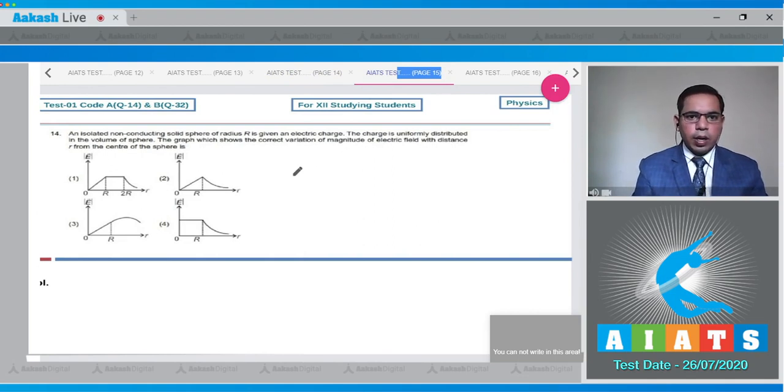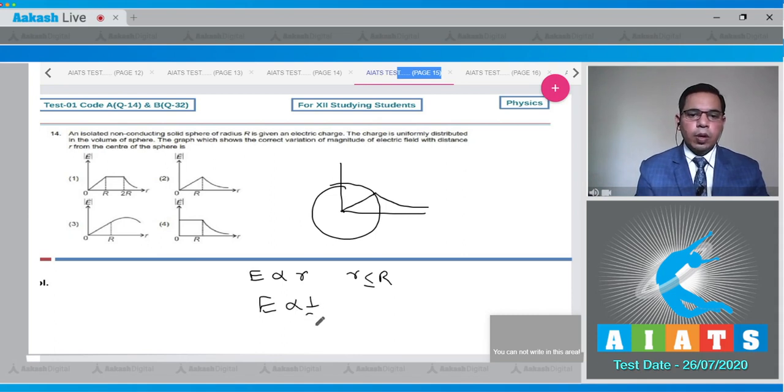Now move to question number 14, which states that an isolated non-conducting solid sphere of radius r is given an electric charge. The charge is uniformly distributed in the volume of the sphere. The graph which shows the correct variation of the magnitude of electric field with distance r from the center of the sphere? We know that for a uniformly charged solid sphere, inside the sphere electric field varies linearly and becomes maximum, and after that it decreases as an inverse square law. That means electric field inside the sphere is proportional to r for r less than R, and electric field is proportional to 1 by r square for r greater than R. Hence option number 2 will be the correct answer.